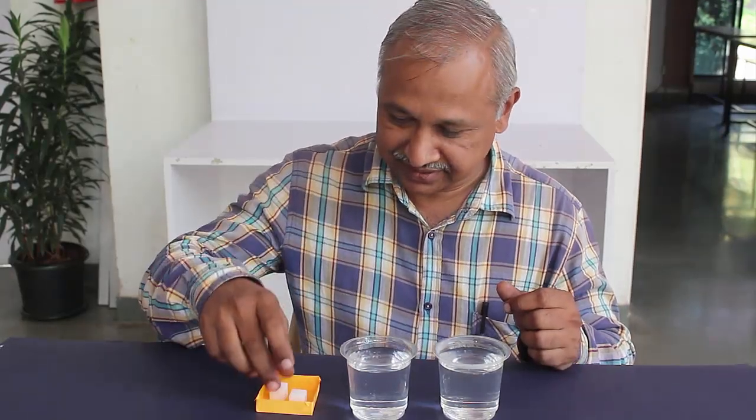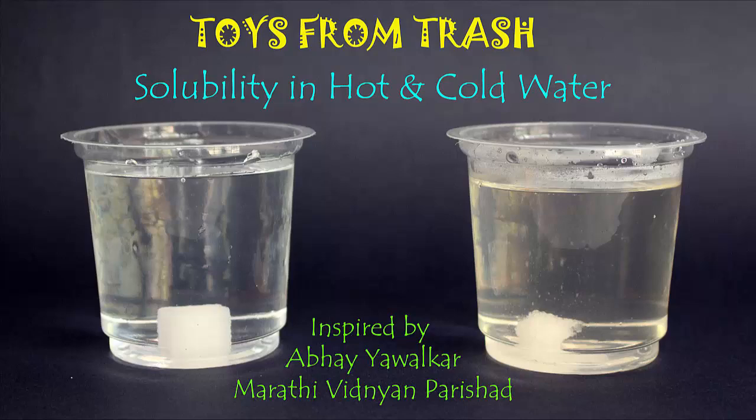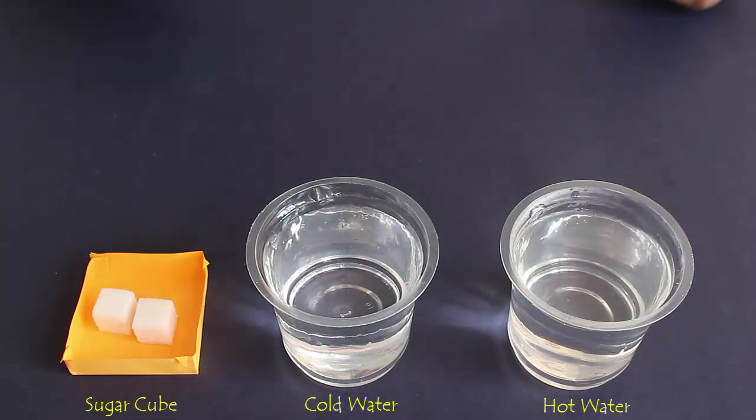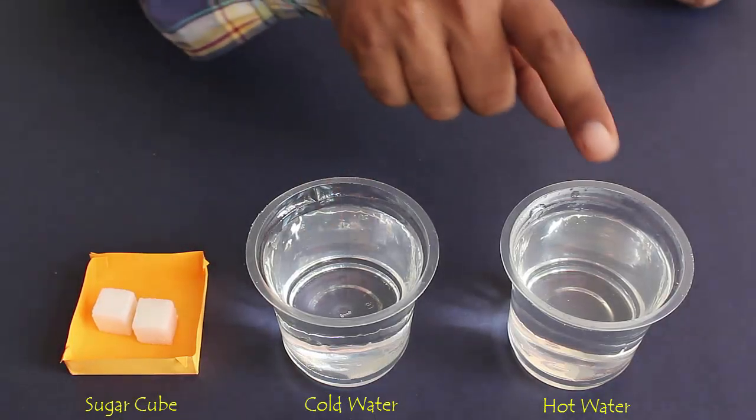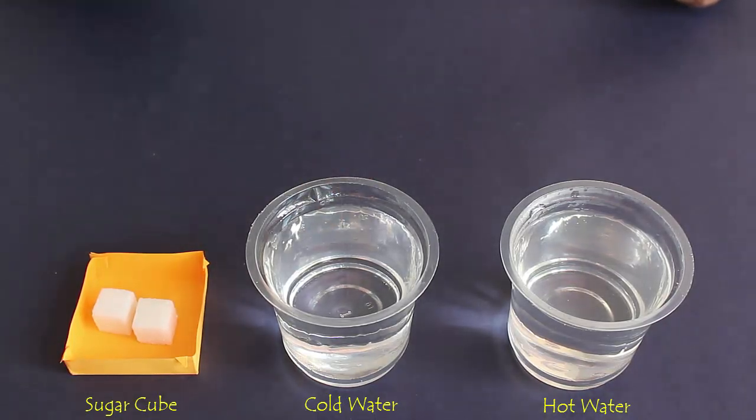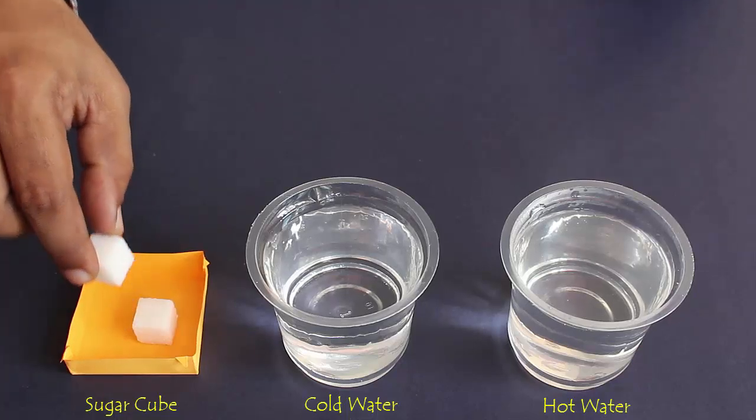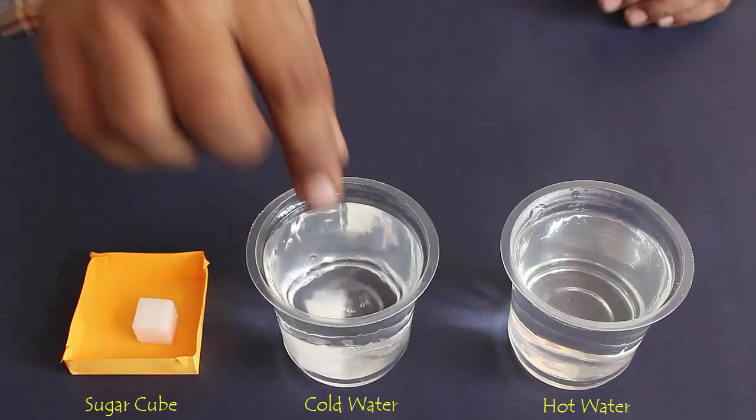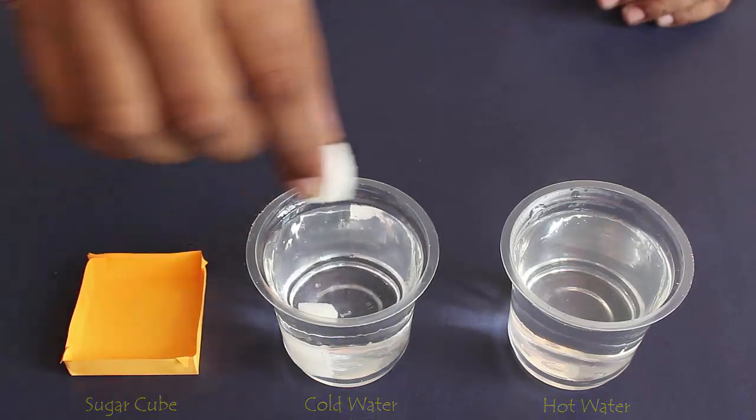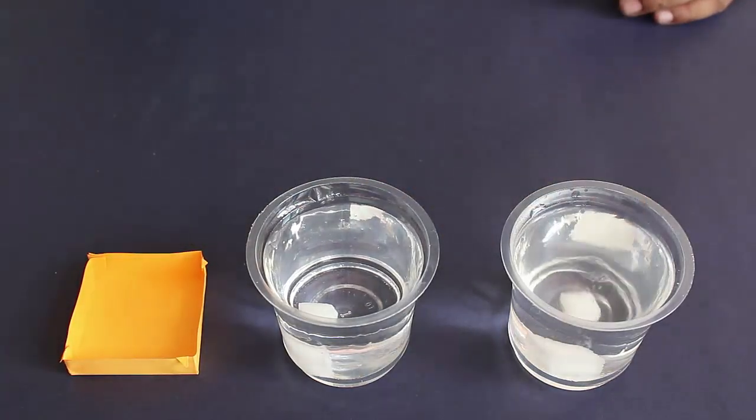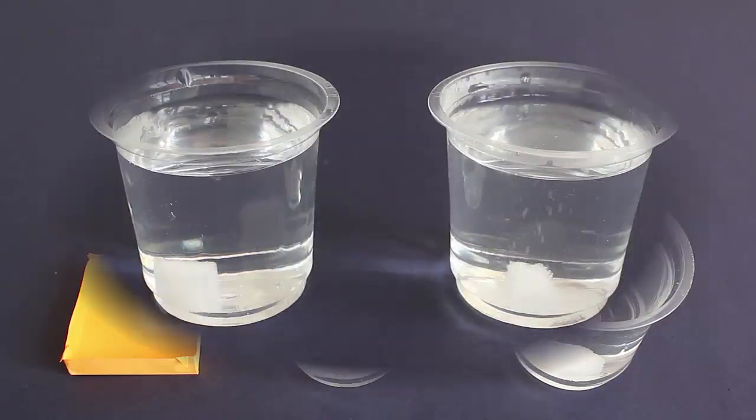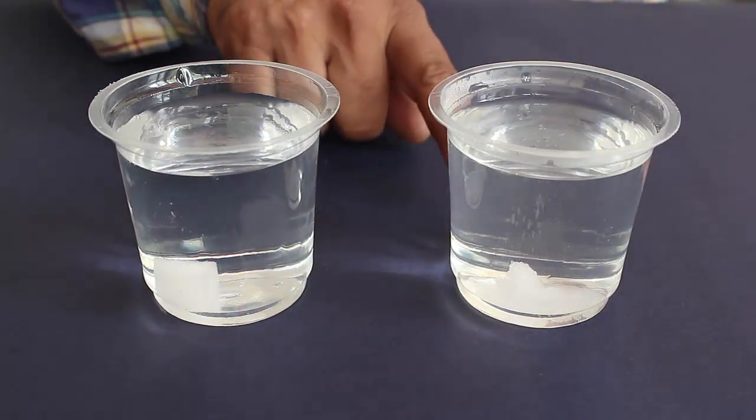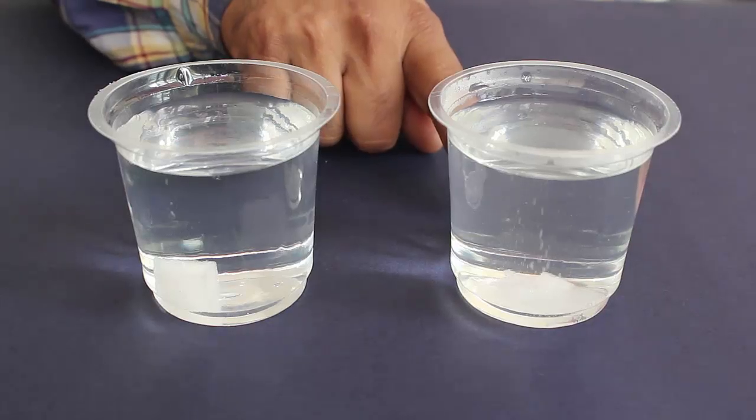For this, you take two glasses—fill one with cold water and the second with hot water. The right glass has hot water and the middle glass has cold water. Take a sugar cube and put a sugar cube in both the glasses, then wait and see in which glass the cube dissolves first.